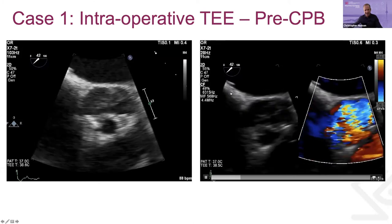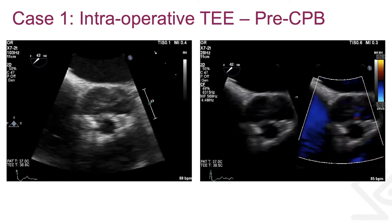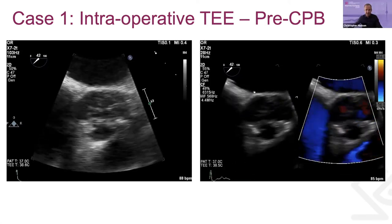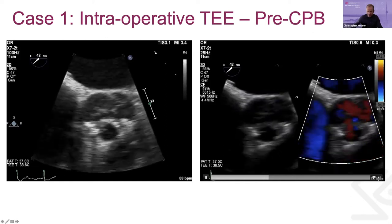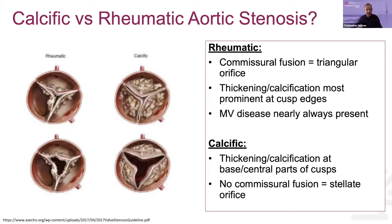The two major types of tricuspid aortic stenosis are calcific and rheumatic. Rheumatic disease typically involves the commissures and you end up with a triangular orifice, while calcific disease has calcification at the base and in the central parts, giving more of a stellate orifice. Another hint for rheumatic versus calcific disease is that with rheumatic disease, you typically have mitral valve involvement.